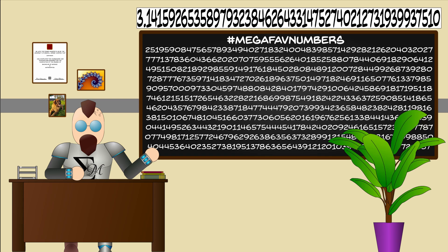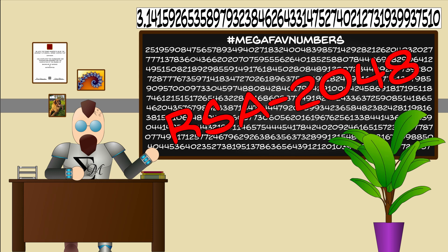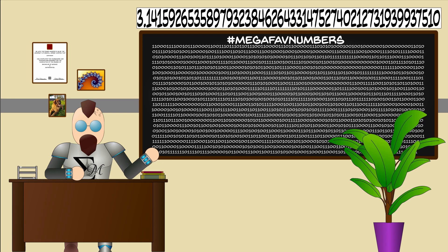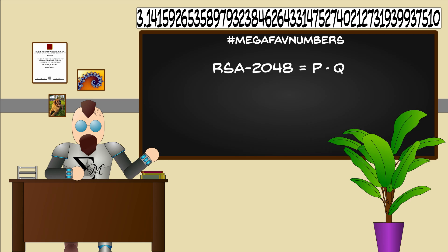My Mega Fave number? This whopper is RSA 2048 and it is a 617 digit number. But what is it? RSA 2048 is a 2048 bit semi-prime, which means that not only can it be written in binary as 2048 ones and zeros, it also is of the form P times Q, where both P and Q are prime.